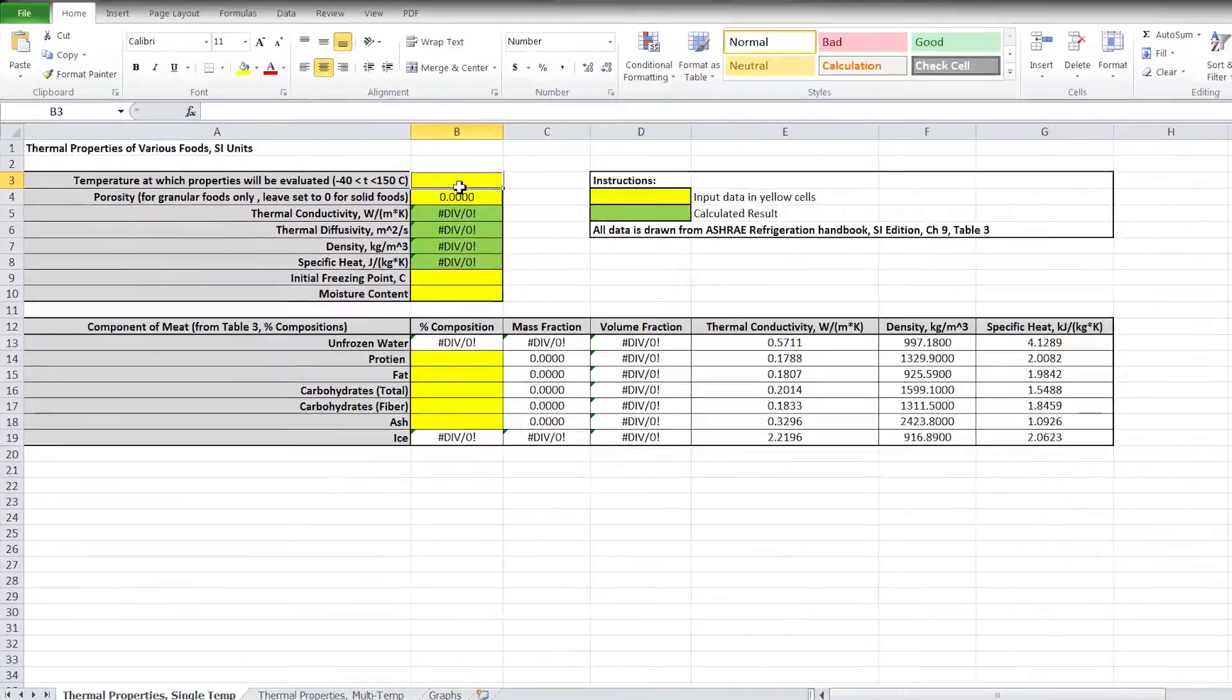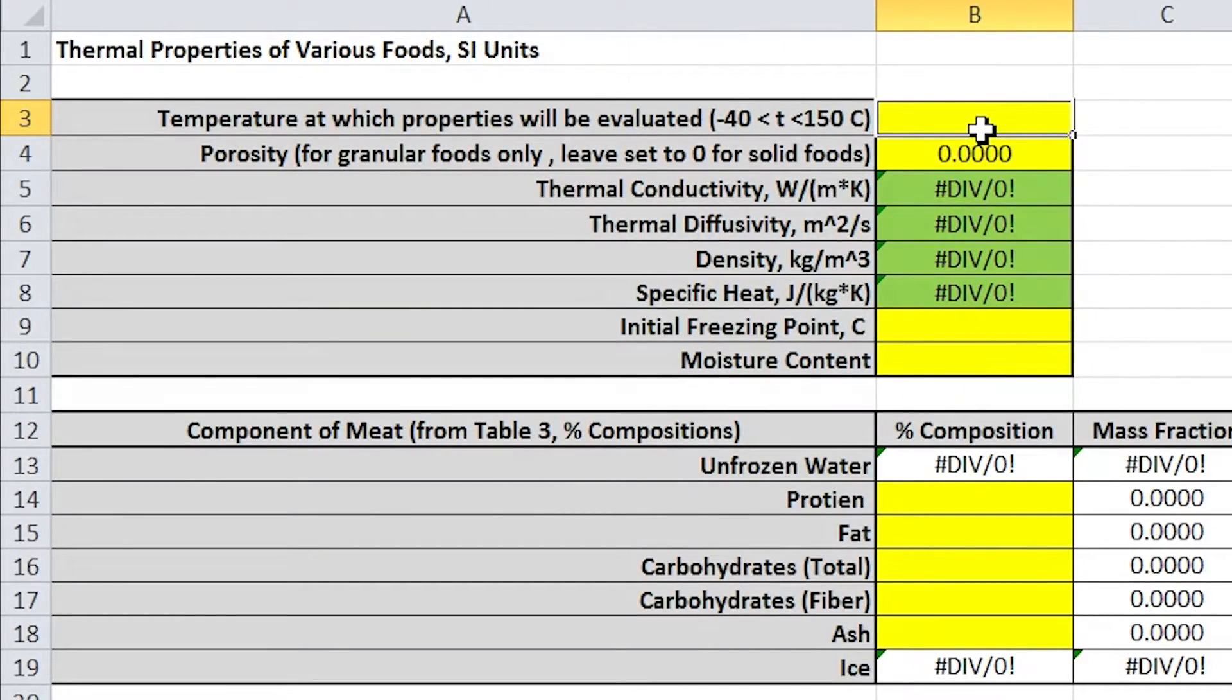To demonstrate the use of this model, I will now calculate the thermophysical properties of lean beef sirloin at a temperature of 50 degrees Celsius.